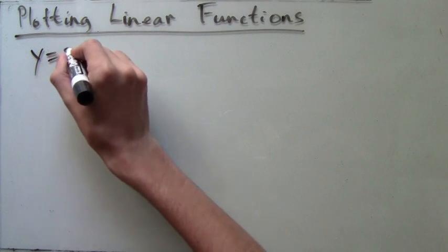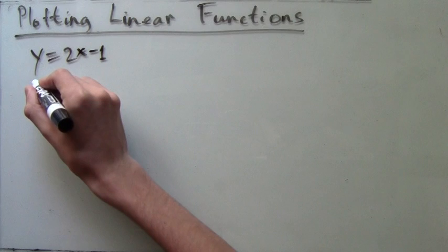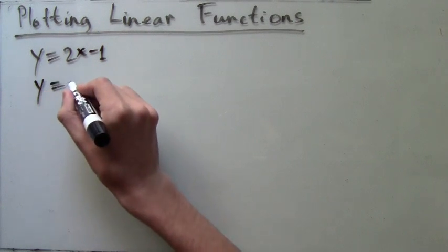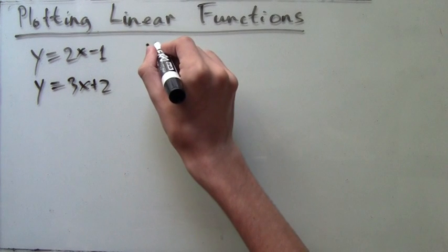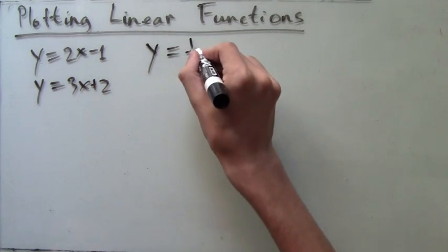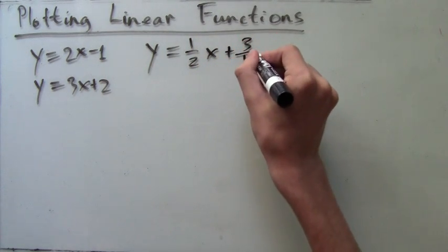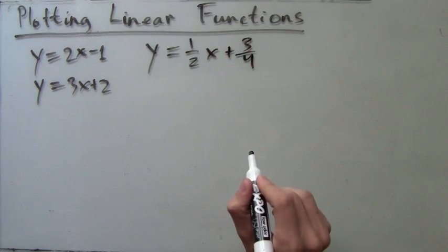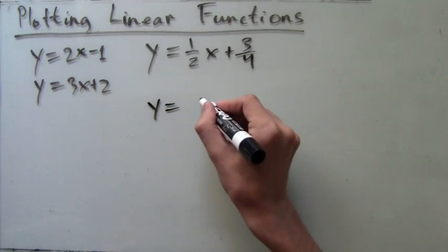Here we have y=2x-1. As another example, y equals 3x plus 2. Another linear function is y=(1/2)x+(3/4). In general, all linear functions have some number multiplied times x plus another number.